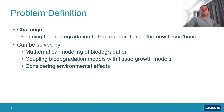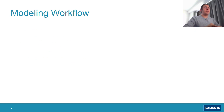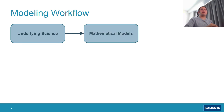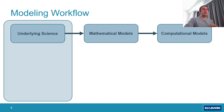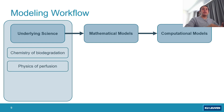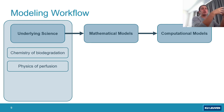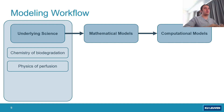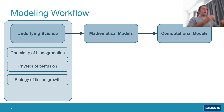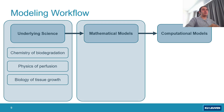The degradation behavior should be optimized for various applications. The challenge in the project was tuning the biodegradation rate to match, for example, the rate of new bone generation or the healing process inside the body. This can be solved by creating a mathematical and computational model of biodegradation and coupling those models with different scales. We also want to consider environmental effects. The modeling workflow involves underlying sciences converted to mathematical models, and then to computational models. In this project, the underlying sciences are the chemistry of biodegradation, the physics of perfusion bioreactors, and the biology of tissue growth.